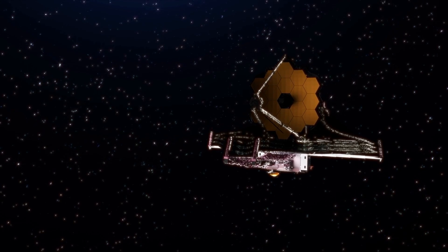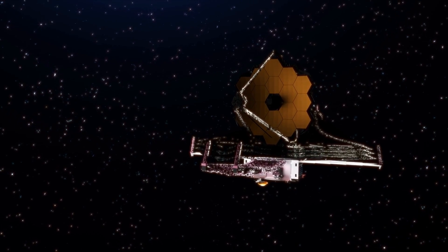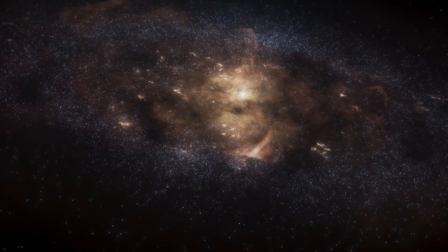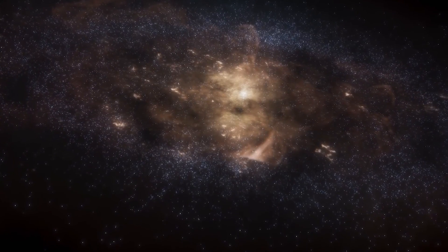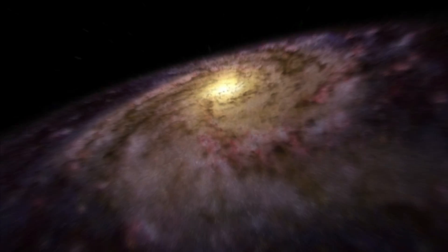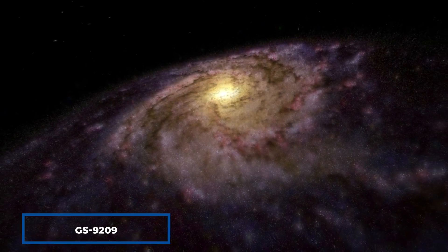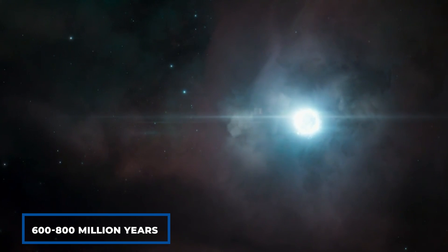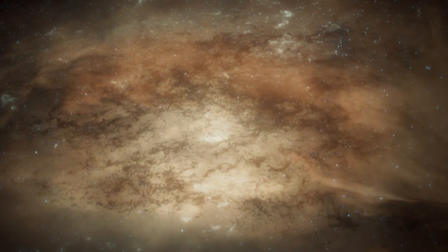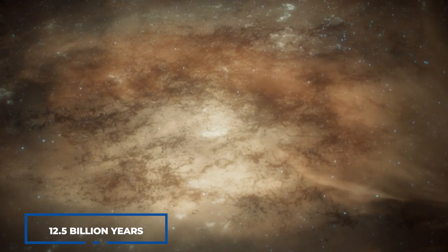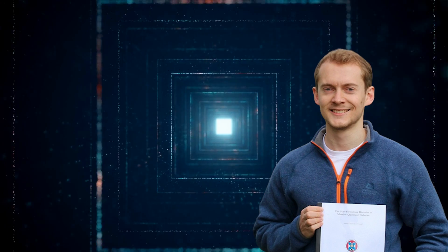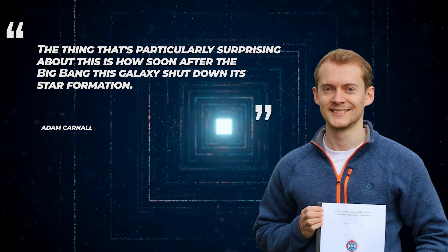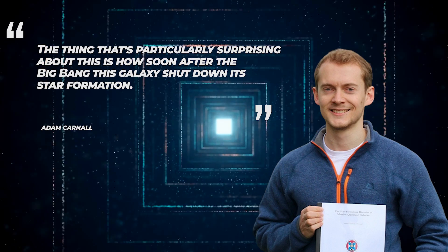And that's not all, the James Webb Space Telescope has recently made another groundbreaking discovery by spotting the earliest known galaxy to be suddenly and mysteriously quenched of its star formation. This galaxy, named GS9209, formed most of its stars in a hyperactive burst of activity between 600 and 800 million years after the Big Bang, but then suddenly stopped over 12.5 billion years ago. Lead author Adam Carnall, an astrophysicist at the Royal Observatory in Edinburgh, commented on the findings saying, the thing that's particularly surprising about this is how soon after the Big Bang this galaxy shut down its star formation.